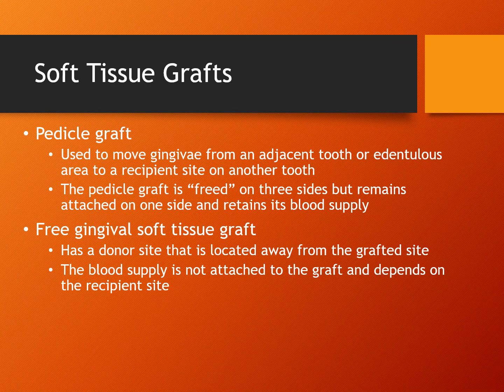There are two types of soft tissue grafts: the pedicle graft and the free gingival soft tissue graft. The pedicle graft is used to move gingiva from an adjacent tooth or edentulous area to a recipient site on another tooth. It is freed on three sides but remains attached on one side and retains its blood supply. The pedicle graft is best used for single-site recession, for root coverage, and for increasing the amount of attached gingiva. A free gingival soft tissue graft has a donor site located away from the needed site, so the blood supply is not attached to the graft and depends on the recipient site. The most common donor site is the hard palate of the patient.